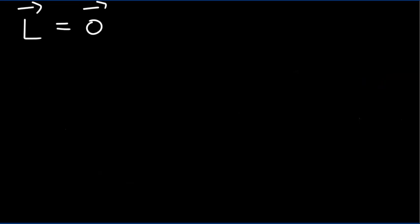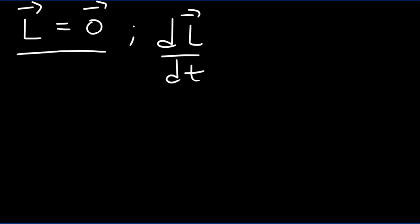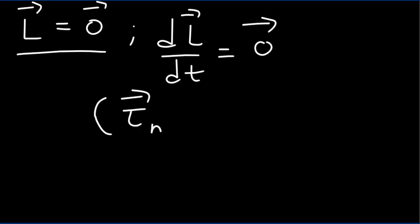The second condition for static equilibrium comes from the fact that for a system in static equilibrium, its angular momentum is zero. That means the rate of change of angular momentum is also zero. The rate of change of angular momentum is simply the net external torque acting on the system, and that should also be zero.